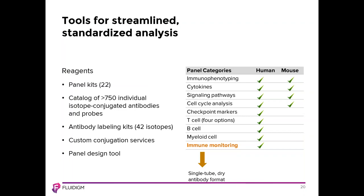Reagents are one of those tools. Fluidigm sells a total of 22 panel kits, many of which are designed to be combined together to create large panels. The range of applications covered includes general immunophenotyping, more targeted phenotyping of certain cell types such as T cells, B cells, or myeloid cells, as well as functional panels assessing cytokines, signaling pathways, and cell cycle analysis. There are also panels devoted to checkpoint markers and in-depth immune monitoring. Fluidigm also offers a large catalog containing more than 750 pre-conjugated antibodies, as well as labeling kits with a choice of 42 metal isotopes to conjugate your own antibodies. Our custom conjugation service allows our in-house experts to label antibodies if you prefer. Fluidigm's panel design tool is an excellent aid in designing or modifying your mass cytometry panels.